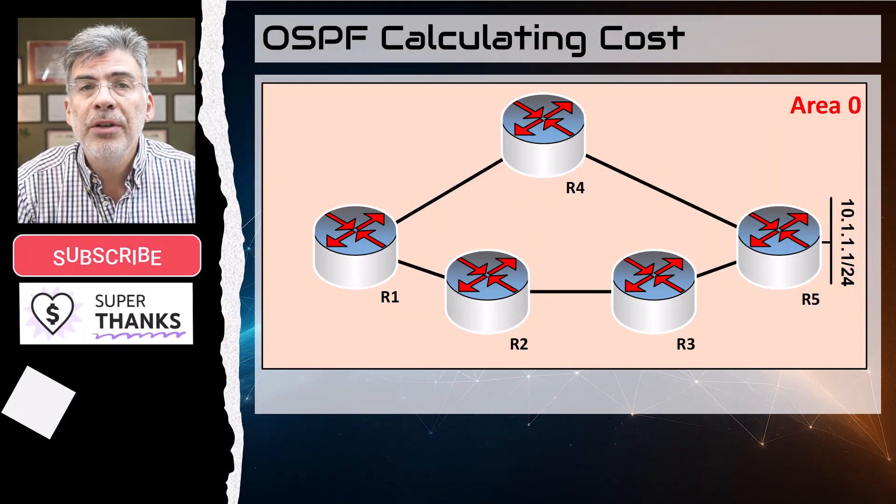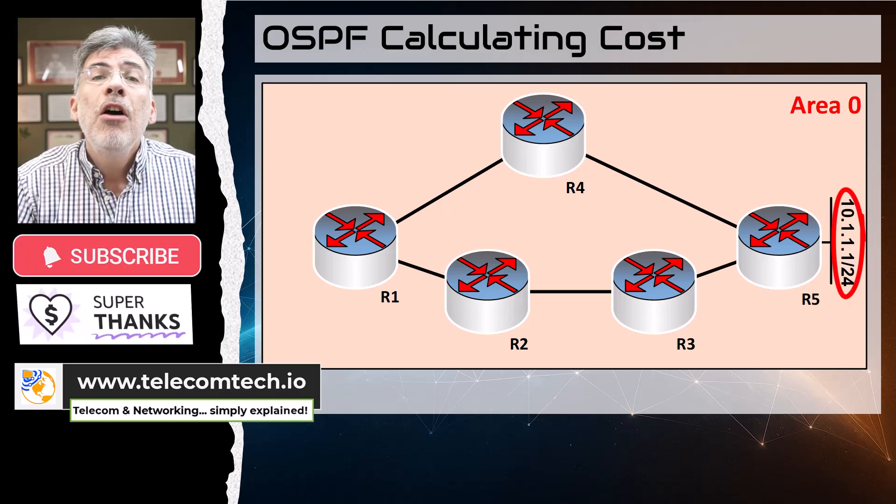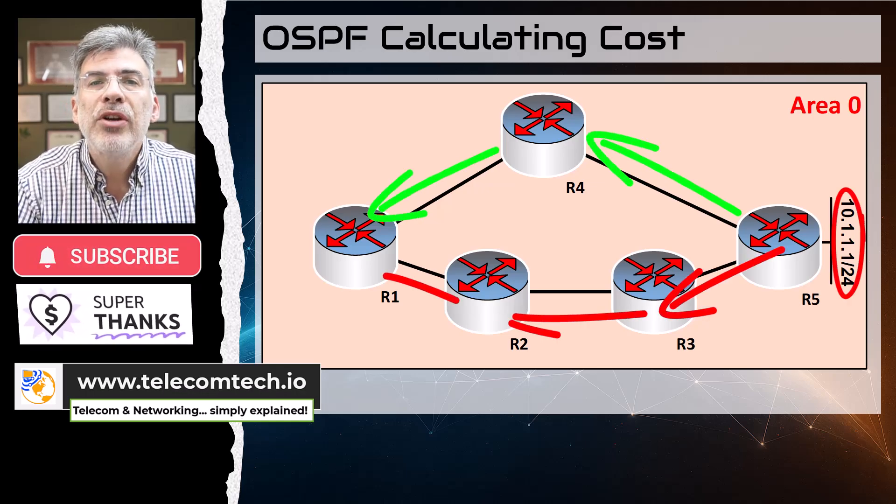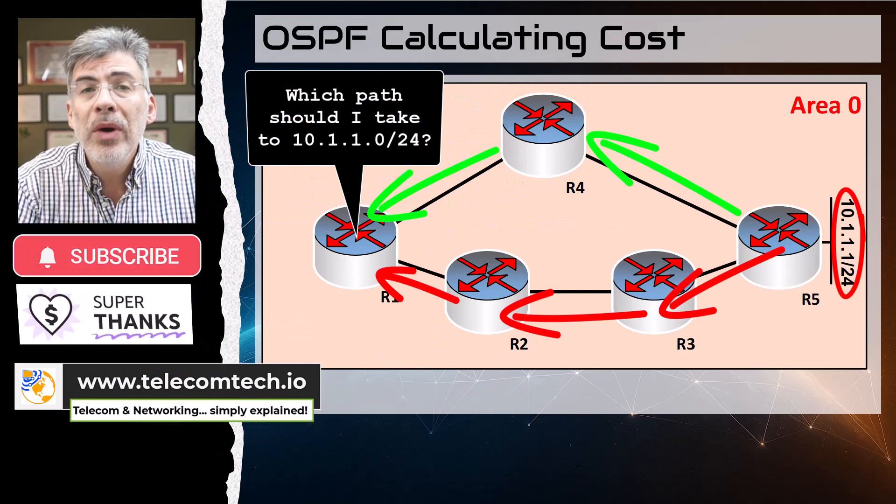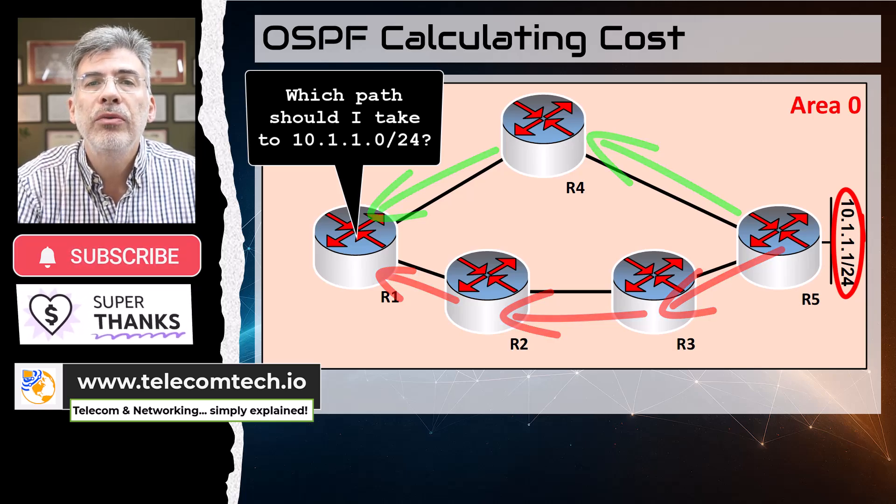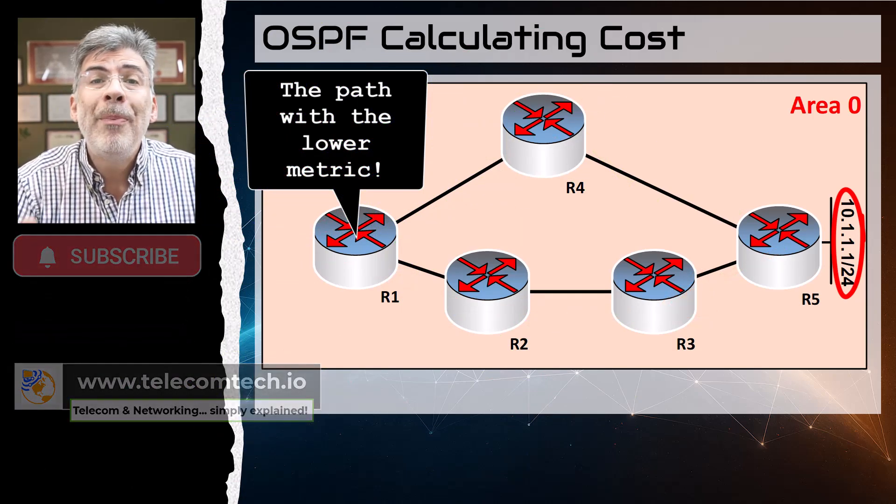Routing protocols are used to allow routers to learn about routes from each other. When more than one path is learned about a specific destination from the same routing protocol, it is the metric that is used to determine which route will be installed in the local routing table.